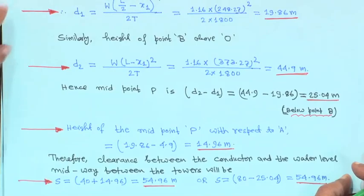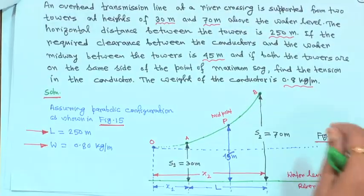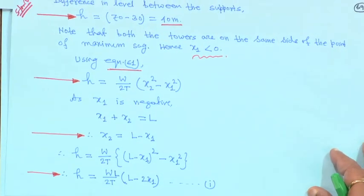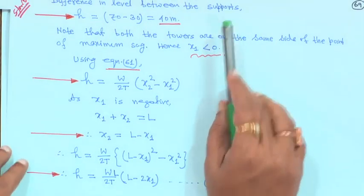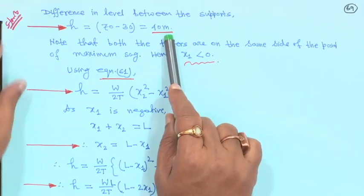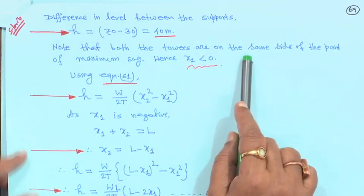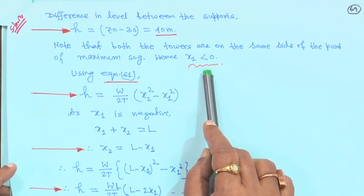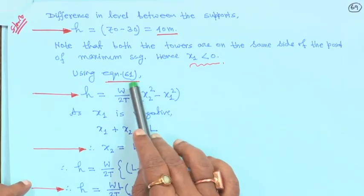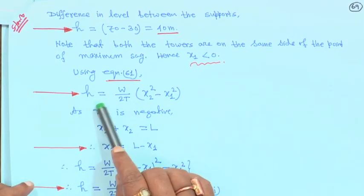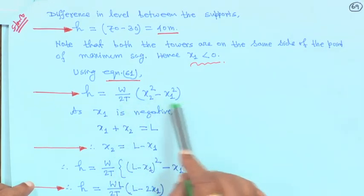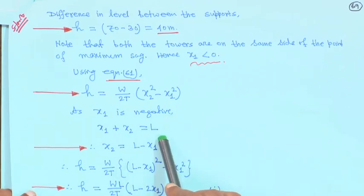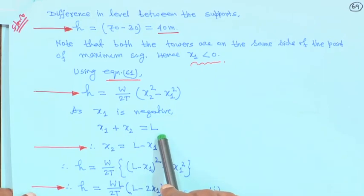Therefore, the difference in level between the supports H is equal to 70 minus 30, that is 40 meter. Note that both towers are on the same side of the point of minimum sag. That means x1 is negative, as we will see later. Using equation 61: H is equal to W upon 2T into (x2 squared minus x1 squared). Since x1 is negative, x1 plus x2 is equal to L.